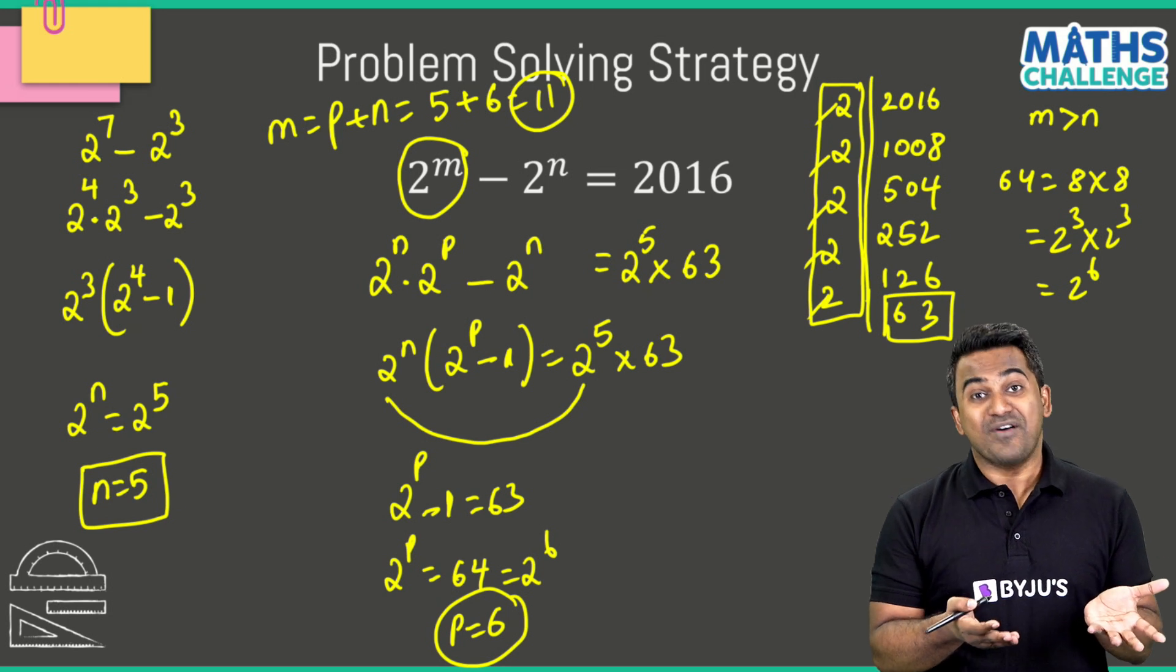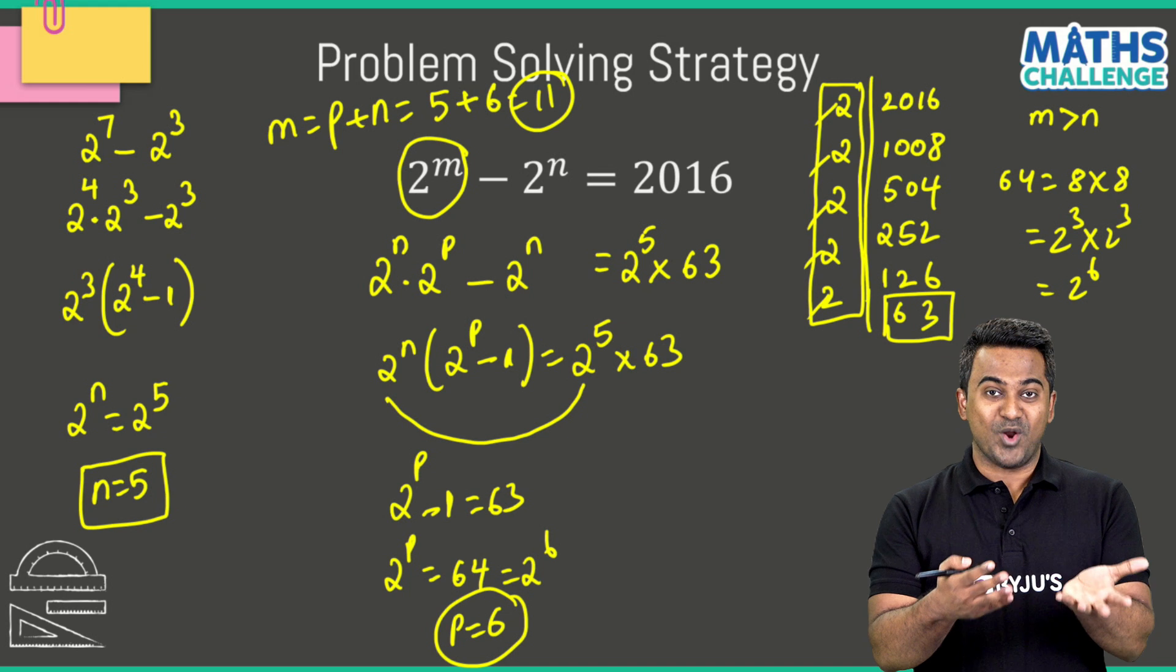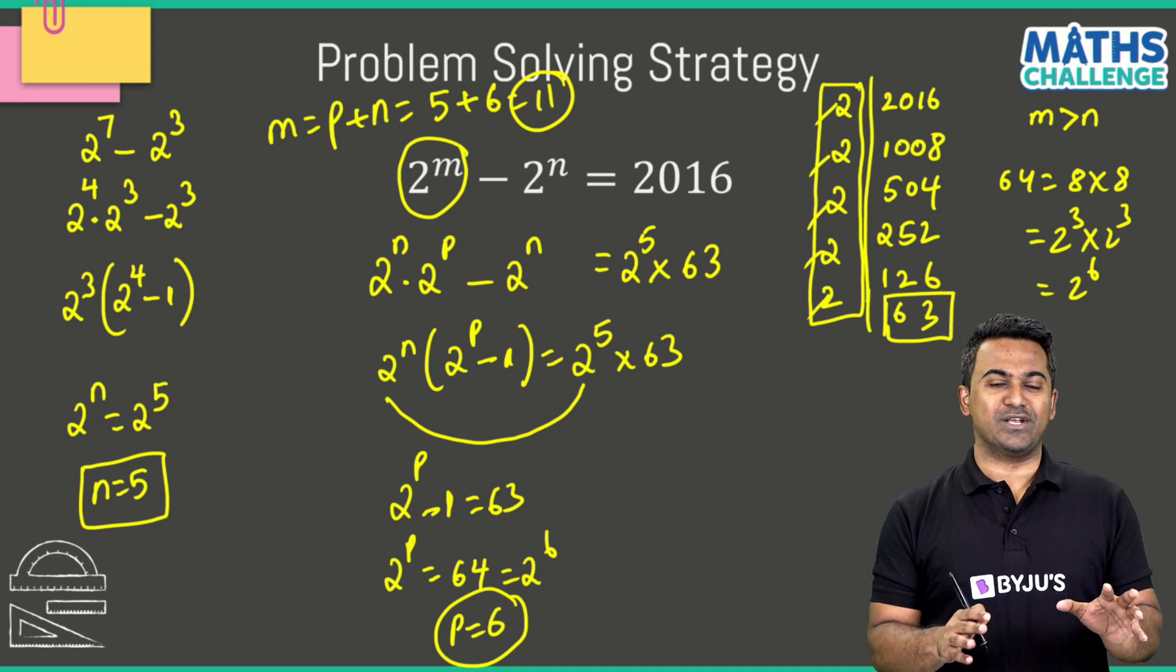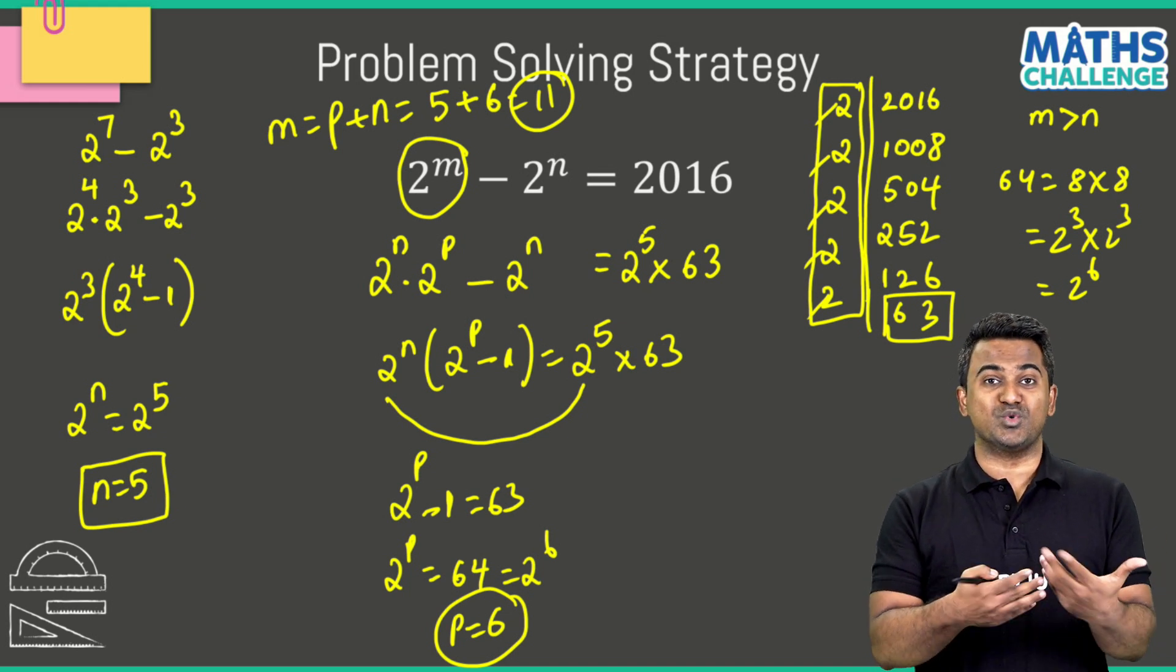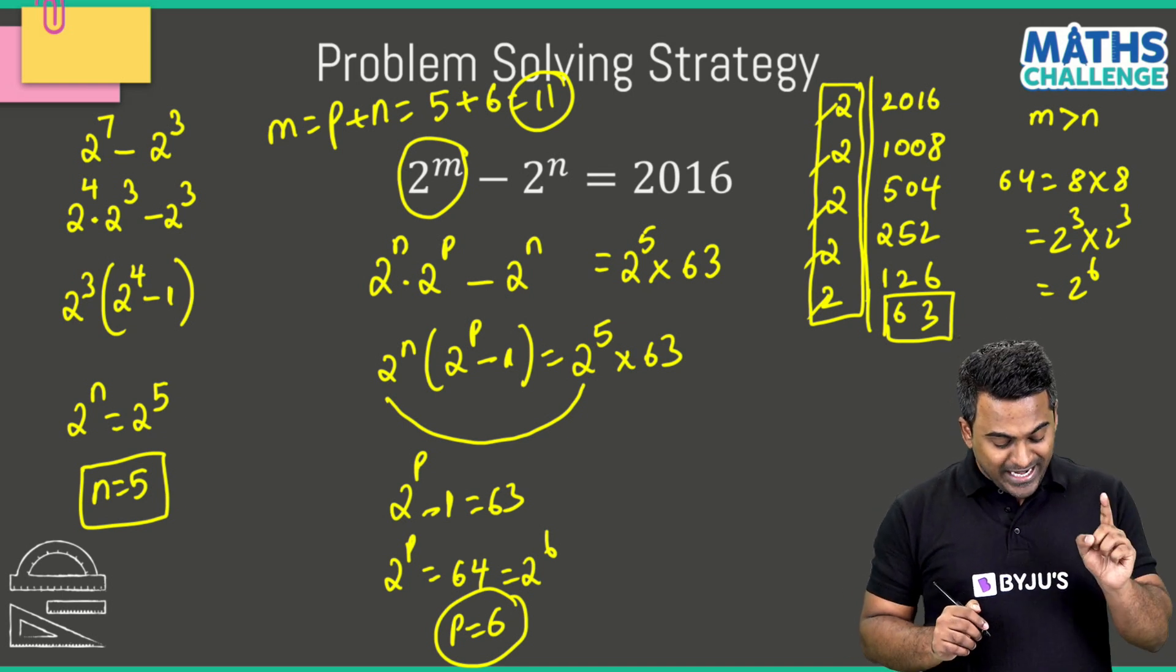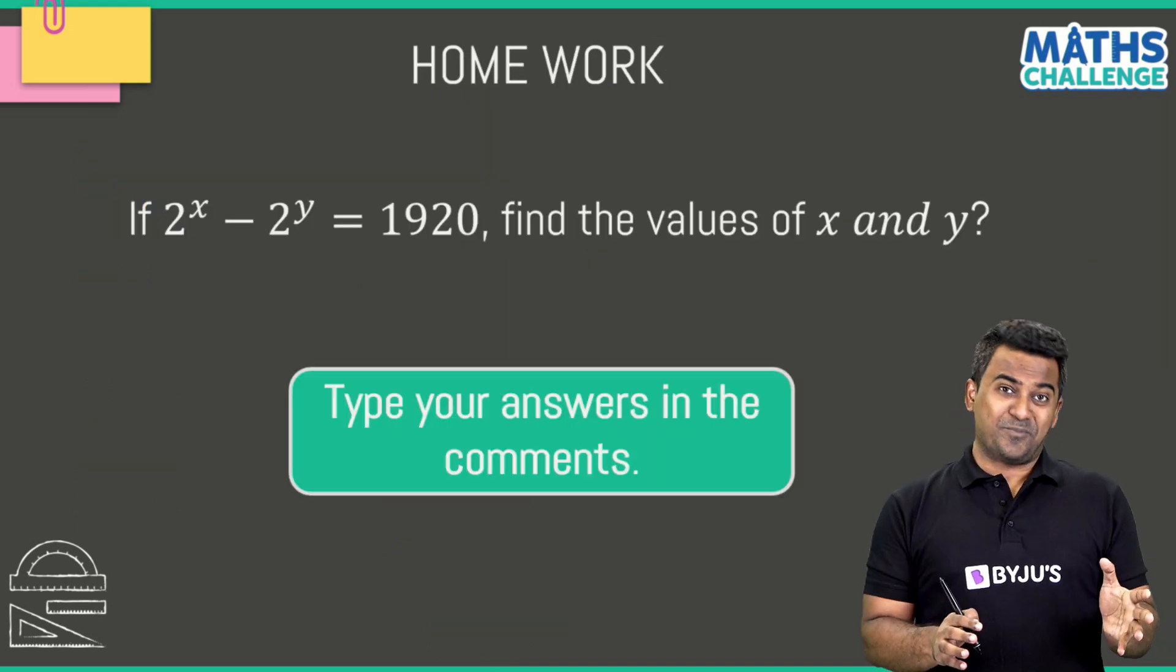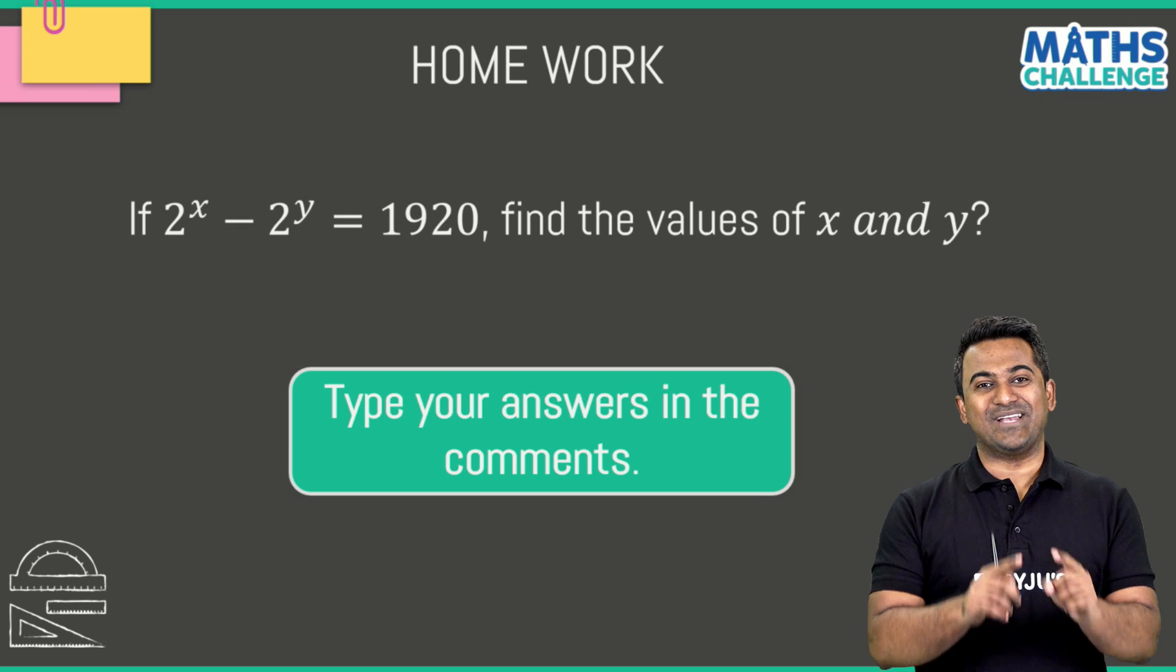Which means the substitution method that we were trying out initially would have worked as well. But more often than not, in some cases it may not. So you've got to know this wonderful technique where you manipulate the equations to suit your advantage in calculation. So m value here is 11 and n value here is 5. Now I've got a challenge for you, a similar problem. Let us know the answers in the comments box.